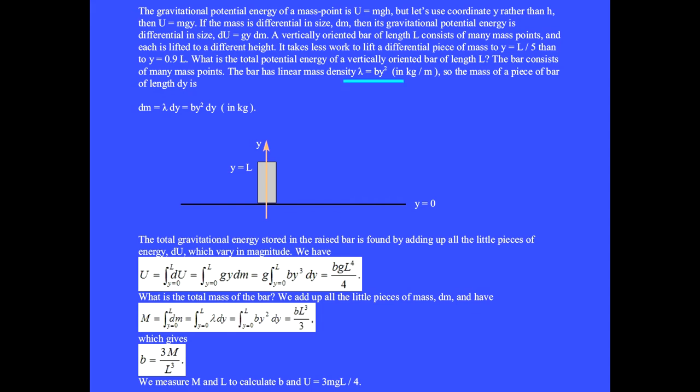The bar has linear mass density lambda equals b·y² in kilograms per meter, where b is a constant. So the mass of a piece of bar of length dy is dm equals lambda·dy equals b·y²·dy in kilograms.